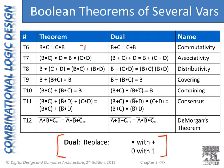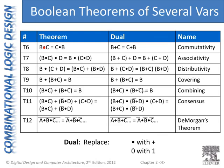So commutativity — we have theorem T6 as well as its dual form T6 prime. Commutativity says B AND C is equal to C AND B; we can commute those terms. B AND C is the same as C AND B — I can move them around and the expression evaluates the same. We can also have the dual of that theorem, replacing ANDs with ORs, and it is also valid.